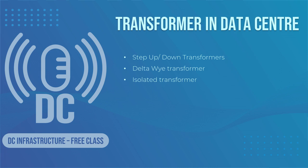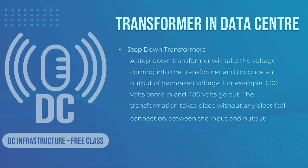A step-down transformer will take the voltage coming into the transformer and produce an output of decreased voltage. For example, 20,000 volts come in and 480 volts go out. The transformation takes place without any electrical connection between the input and output. The step-up transformer works in a similar manner. The only difference is that the primary coil has fewer turns of windings than the secondary coil.